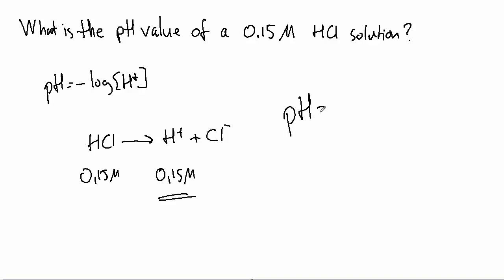So the concentration of HCl is actually also the concentration of the hydrogen ion. Therefore, the pH value is simply the negative log of 0.15 and that gives me 0.823.